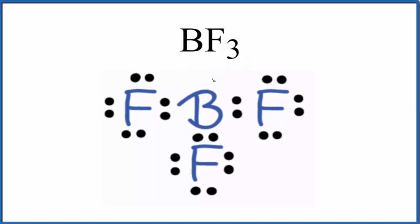So we start with a valid Lewis structure, and you might notice something kind of odd. Boron only has six electrons around it, but that's okay. Boron is an exception to the octet rule, so this is the best Lewis structure for BF3.